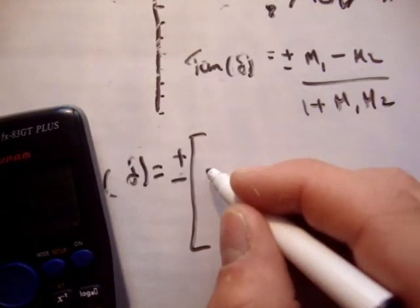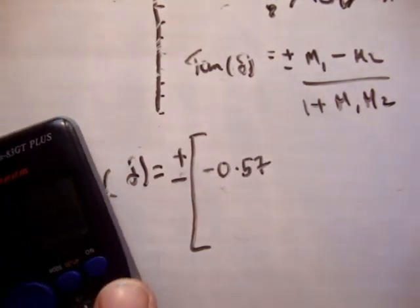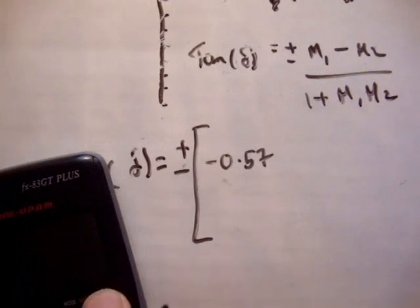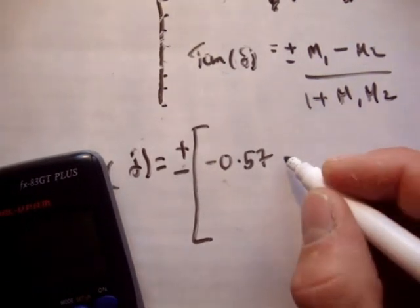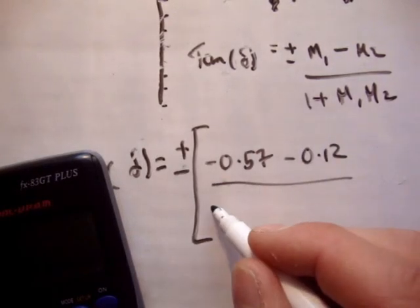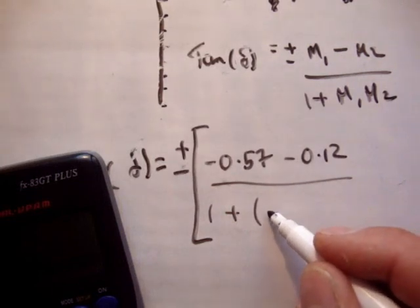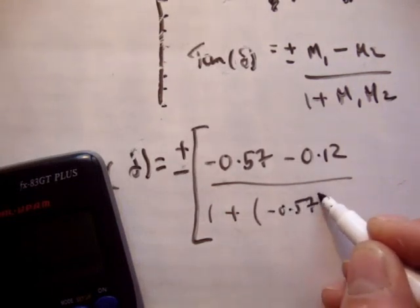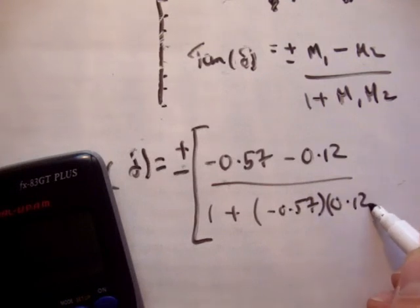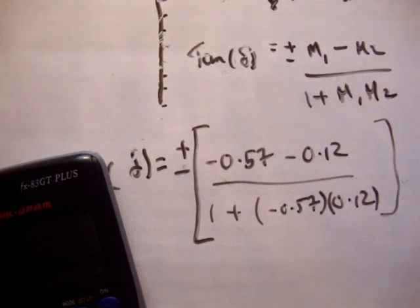Alright, so the tan of 150 is minus 0.57. The tan of 7 is equal to 0.12 over 1 plus, over 1 plus minus 0.57 times 0.12, like that.